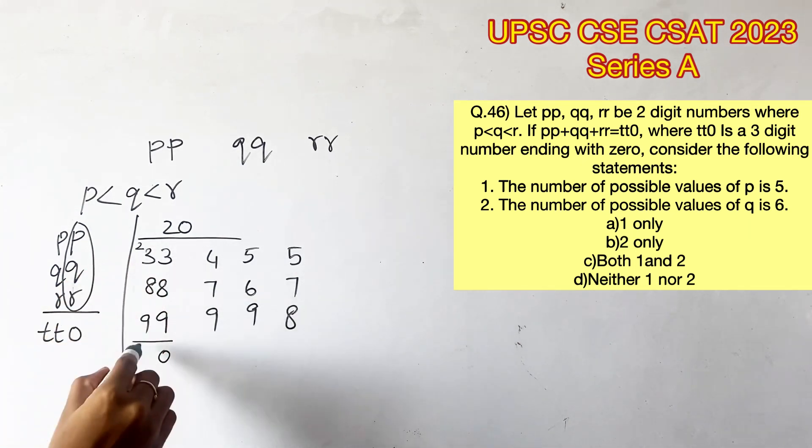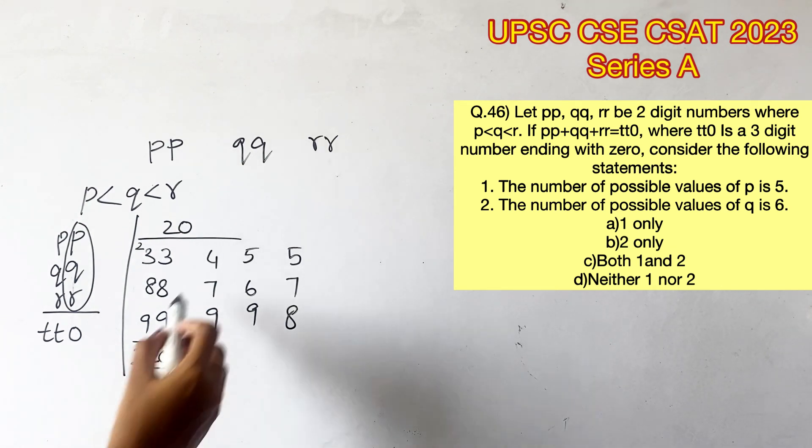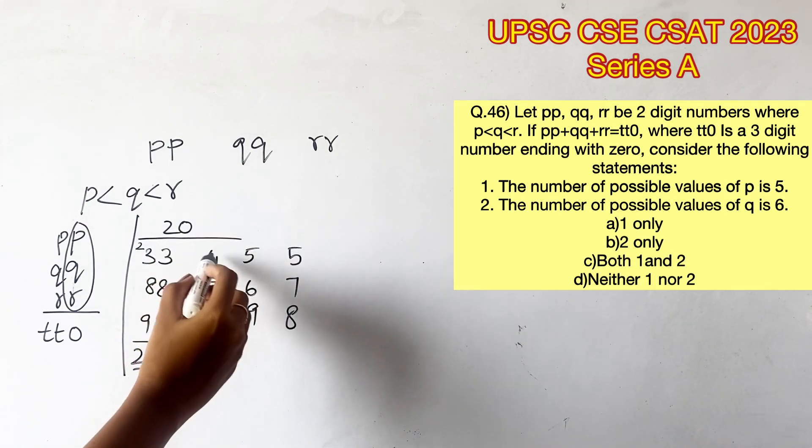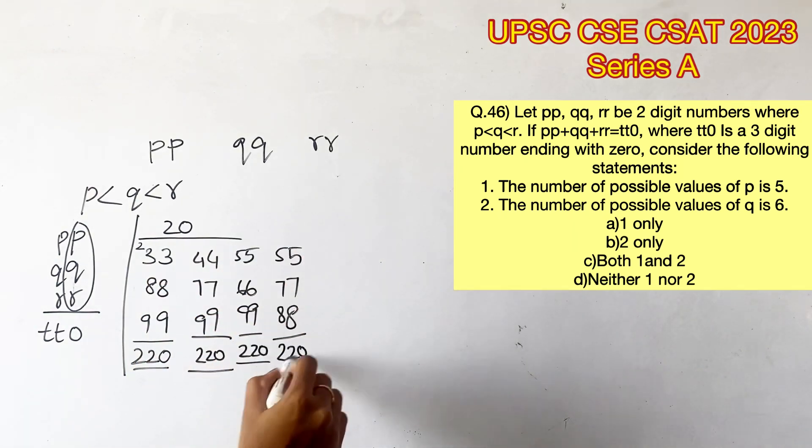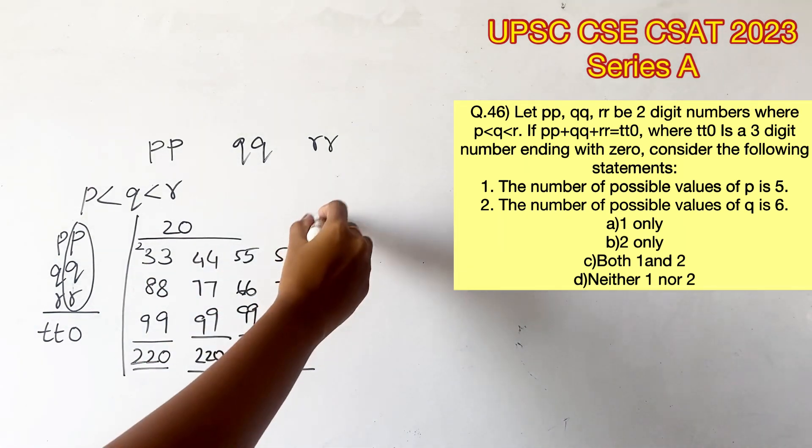Since they are the same digits in the tens place, they also add up to 20. And since a 2 is carried over already, it will add up to 22. This will apply the same for every other possibility as well. So the format TT0 is also achieved.